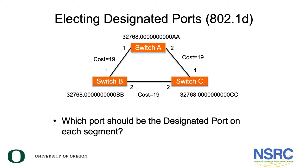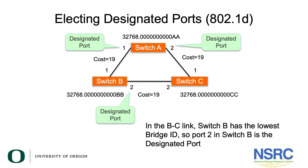Looking at our three-switch network again: for any segment that includes the root bridge — that is, the A-to-B and A-to-C segments — the designated port is always the port on Switch A. For the segment between Switch B and Switch C, both ports had the same path cost of 38. Applying the tie-breaking rules, Switch B has the lower bridge ID because its MAC address is smaller, so Port 2 of Switch B becomes the designated port for that link.